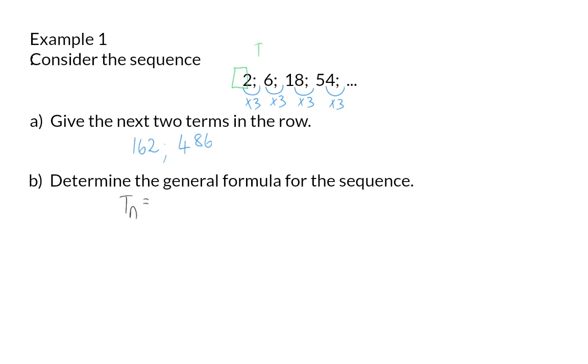To form term 2 I will then multiply by 3 once. To get term 3 I'm going to multiply by 3 a second time, and for term 4 I'm going to multiply by 3 a third time. Can you see that for term 2 we multiply by 3 only once? For term 3 we multiply by 3 twice, and for term 4 we multiply by 3 three times. So every time one less than the position of the term.